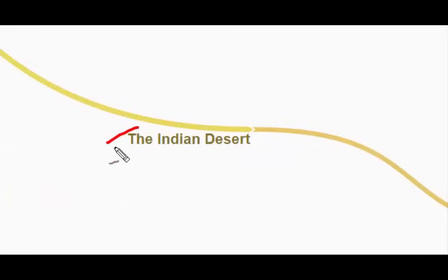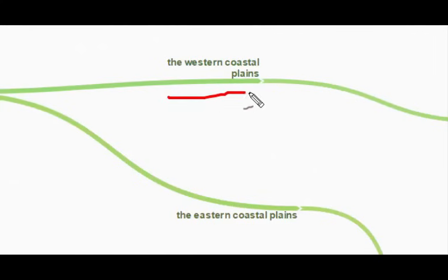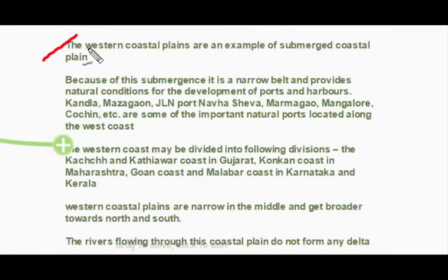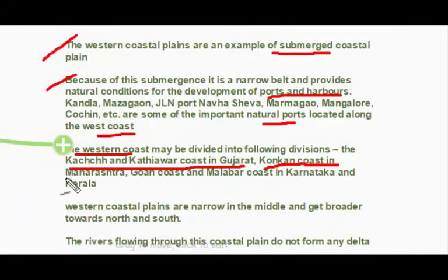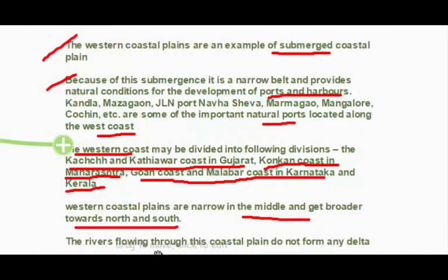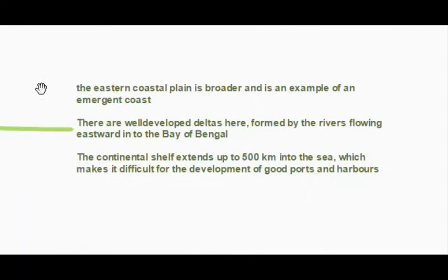Moving on to the coastal plains, which are divided into two parts: the western coastal plain and the eastern coastal plain. The western coastal plains are an example of submerged coastal plains — because of this submergence, it is a narrow belt that provides natural conditions for the development of ports and harbors. Kandla, Mazagaon, Jawahar Port, Nhava Sheva, Marmagao, Mangalore, and Cochin are some important natural ports along the west coast. The western coast is divided into: Kutch and Kathiawar coast in Gujarat, Konkan coast in Maharashtra, Goan coast, and Malabar coast in Karnataka and Kerala. Western coastal plains are narrow in the middle and get broader towards north and south, and rivers flowing through them do not form any delta. The eastern coastal plain is broad and is an example of an emergent coast, with well-developed deltas formed by rivers flowing eastward into the Bay of Bengal. The continental shelf extends up to 500 km into the sea, making it difficult for the development of good ports and harbors.